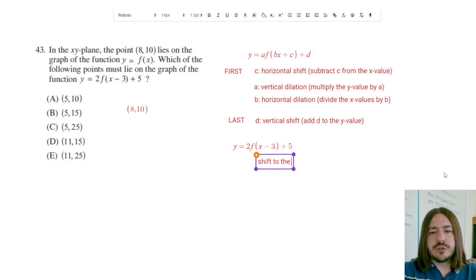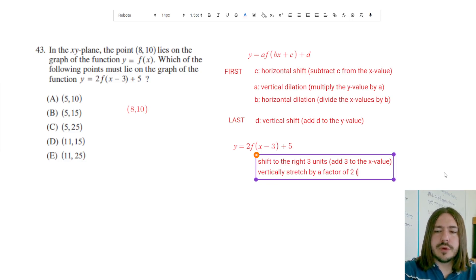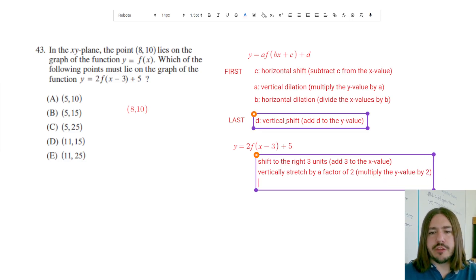So first is going to be that horizontal shift. So we're going to shift to the right 3 units. So we're going to add 3 to the x value. That's going to be our first step. And then we want to go down. We've got a vertical dilation, so we want to vertically stretch by a factor of 2. And in this case, we're going to multiply the y values by 2.